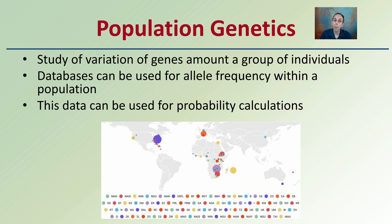Population genetics is the study of variation of genes among a group of individuals, looking more at the true genetics than the phenotypic expressions. This population genetics database is used for allele frequencies within a population, and this data can be used for probability calculations — comparing someone to the general population, or the odds that we might see that gene. This is a great way to use a large database to determine the odds that a genotype is just an anomaly, or how frequently it may be present within a large population.